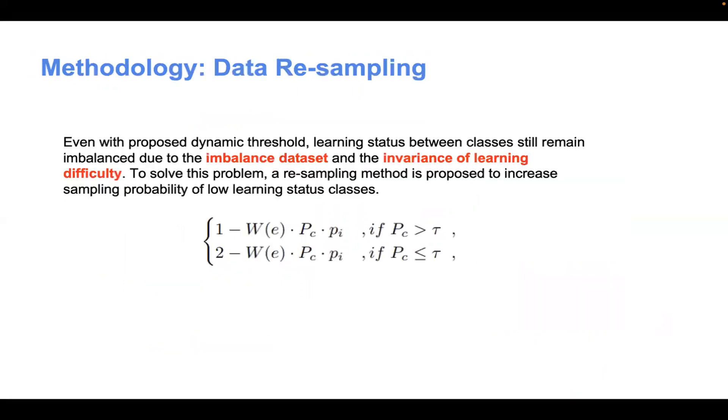The second part is data resampling. Even with the proposed dynamic threshold, learning status between classes still remains imbalanced due to the imbalanced dataset and the variance in learning difficulty. To solve this problem, a resampling method is proposed to increase the sampling probability of low learning status classes.